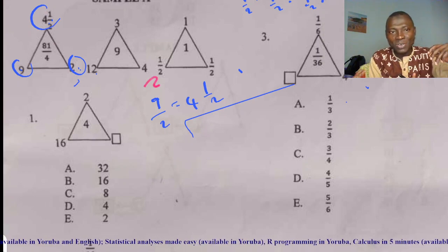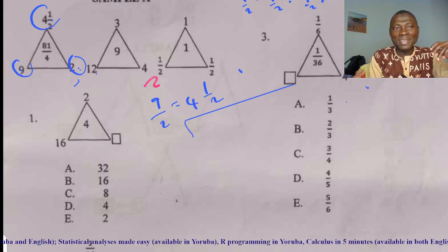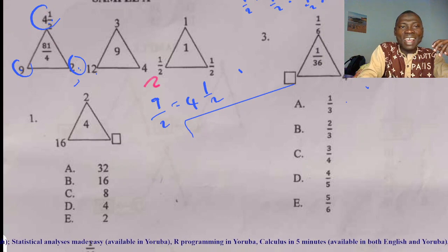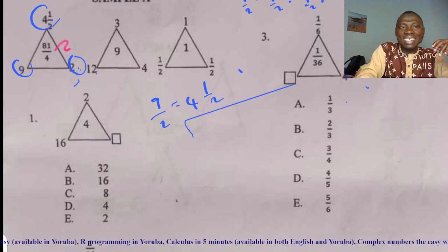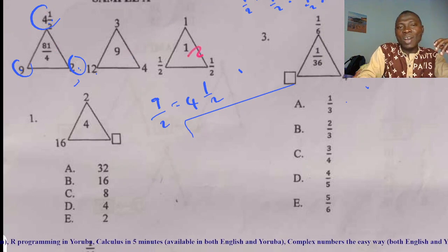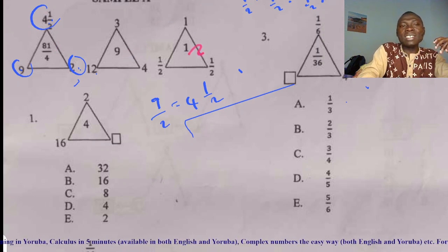What about the one in the middle? Think about it. Since we have 4 and a half here and we have 8, 1 divided by 4 here is 3, you have 9 here. This is 1, you have 1 here.